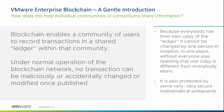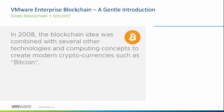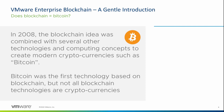It's also protected by some very secure mathematical safeguards. In 2008, the blockchain idea was combined with several other technologies to create something known as Bitcoin. Now, Bitcoin was the first technology based on blockchain, but not all blockchain technologies are cryptocurrencies — an important distinction. Bitcoin is based on blockchain, but blockchain does not equal Bitcoin. Blockchain is just the method or technology used for implementing different solutions, one of which was Bitcoin.